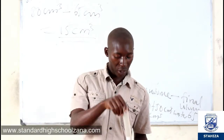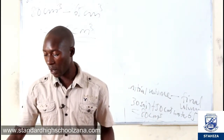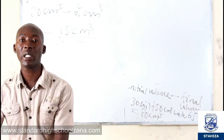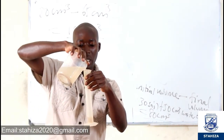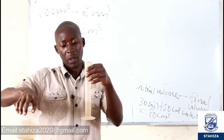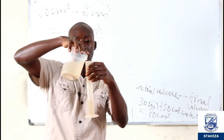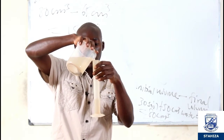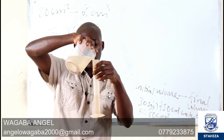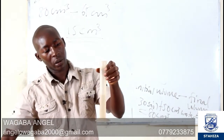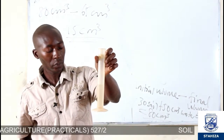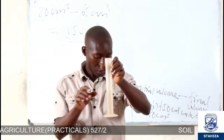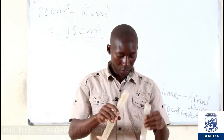Now we are going to loam soil. We are also going to put in 50 cubic centimeters of water, as you are seeing. So this is 15 cubic centimeters of water. We are going to put it in the loam soil.